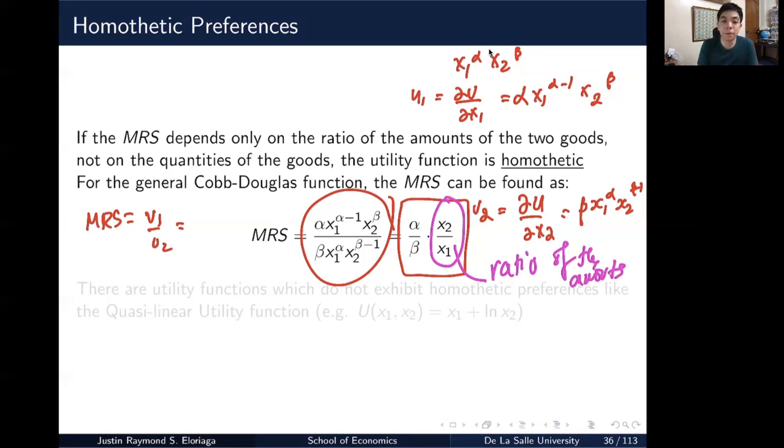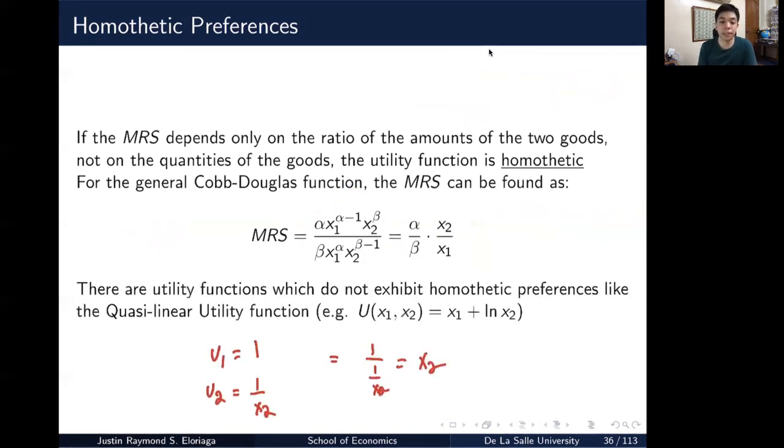Now, what's an example of a type of utility function that does not adhere to that? Well, you have your quasi-linear utility function, which looks like this. So if you take the derivative of this function, that's u equal to x1 plus ln x2, you get the derivatives here, which we found this to be u1.